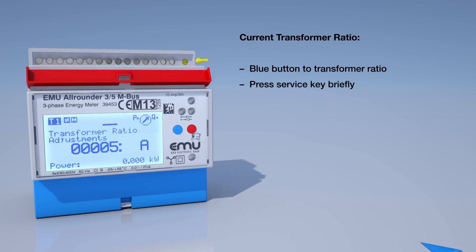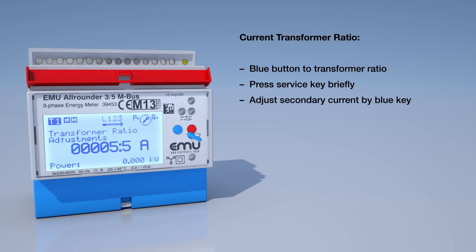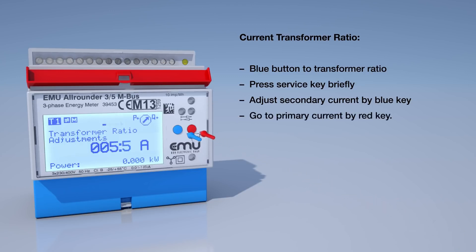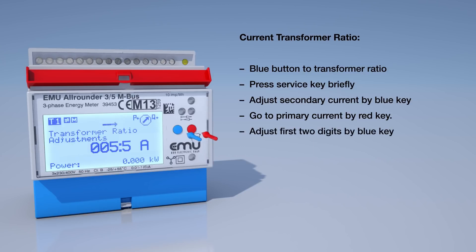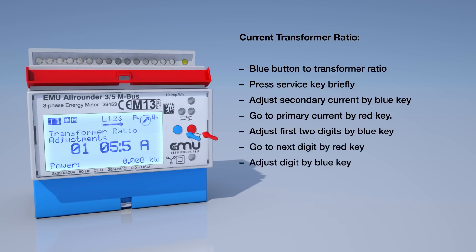Now use the blue button to select the secondary current at 5 or 1 ampere. Use the red button to switch to the primary current. The blue button now enables you to change the first two numbers. The red button continues on to the next step where you can adjust the numbers with the blue button.